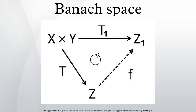The Banach–Mazur distance d(X, Y) between two isomorphic but not isometric spaces X and Y gives a measure of how much the two spaces X and Y differ.